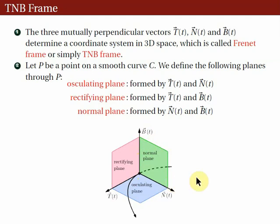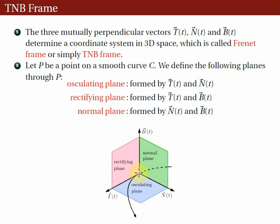Before we proceed, we note two things. First, the point P on the smooth curve is also a point on each of the planes — the osculating, rectifying, and normal planes. Also, the unit binormal vector B is perpendicular to the osculating plane. Similarly, the unit tangent vector T is perpendicular to the normal plane, and the unit normal N is perpendicular to the rectifying plane. We will use these facts in the next example.